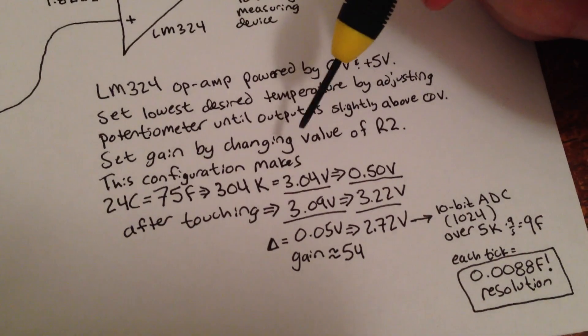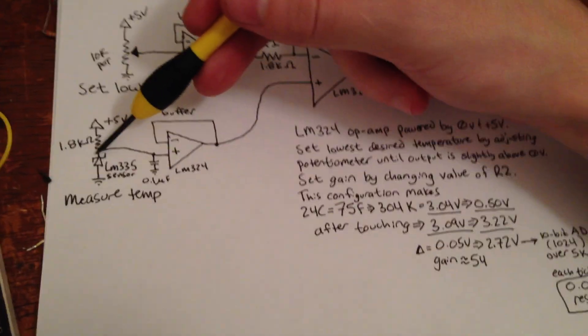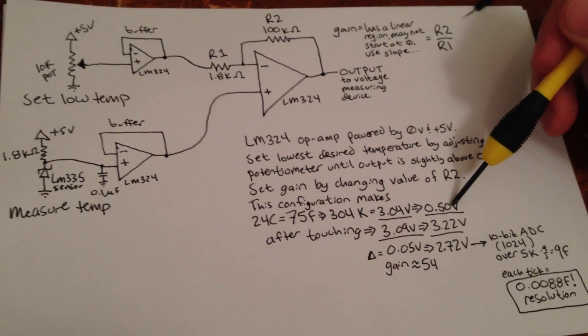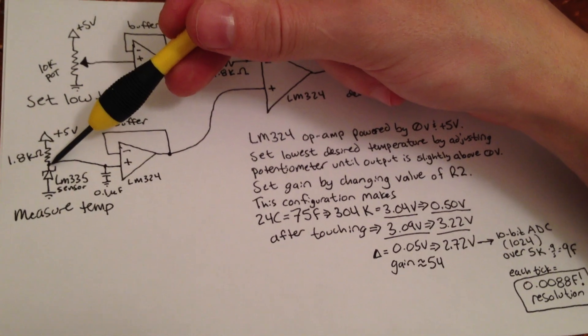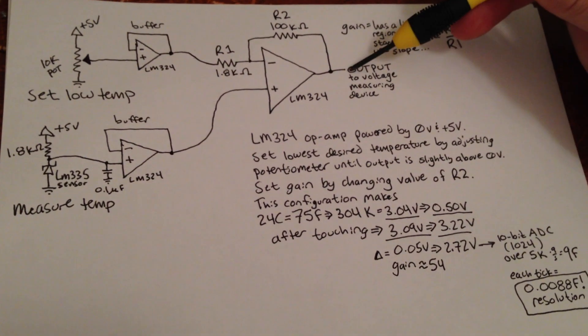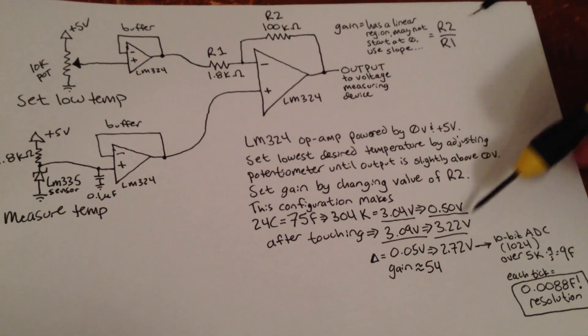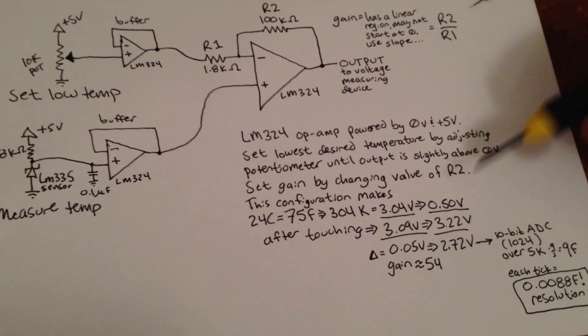...at room temperature, it's 3.04 volts at this point. And the output reads half of a volt. After I leave my finger on for a full minute, this point reaches 3.09 volts, and this point reaches 3.22 volts, which is great. So with my region of interest, it swings a full 3 volts.